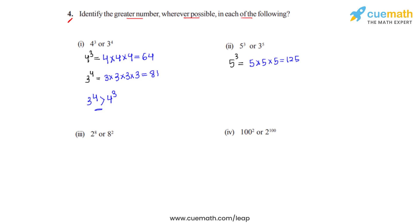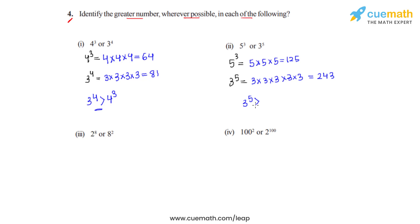Then we will expand 3 raised to 5, wherein 3 is to be multiplied 5 times as the power is 5. So 3 times 3 times 3 times 3 times 3. We know that 3 multiplied 4 times gives us 81, and 81 multiplied by 3 gives us 243. So from the two expansions we can clearly say that 3 raised to 5 is greater than 5 raised to 3.